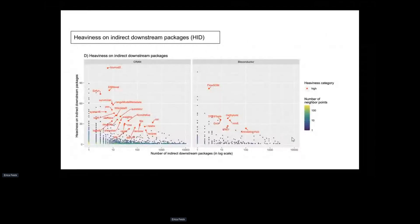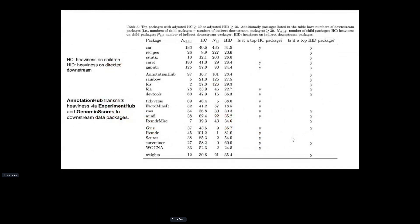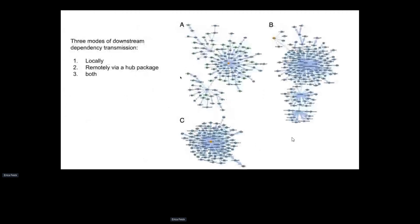There's also a study of heaviness on indirect or remote downstream packages (HID). The list of top packages changes a little bit. Comparing the two lists, some packages affect both direct child packages and remote downstream packages; some only affect remote downstream packages; and some only affect local direct child packages. AnnotationHub, for example, has two hub child packages — ExperimentHub and GenomicScores — which further transmit dependencies to many downstream data packages, so its effect is mainly remote.